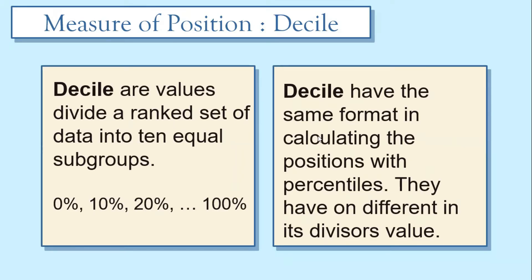Decile are values that divide a ranked set of data into 10 equal subgroups. Based on the presentation, we'll start with 0% and end at 10%, so the distribution would be 10%.